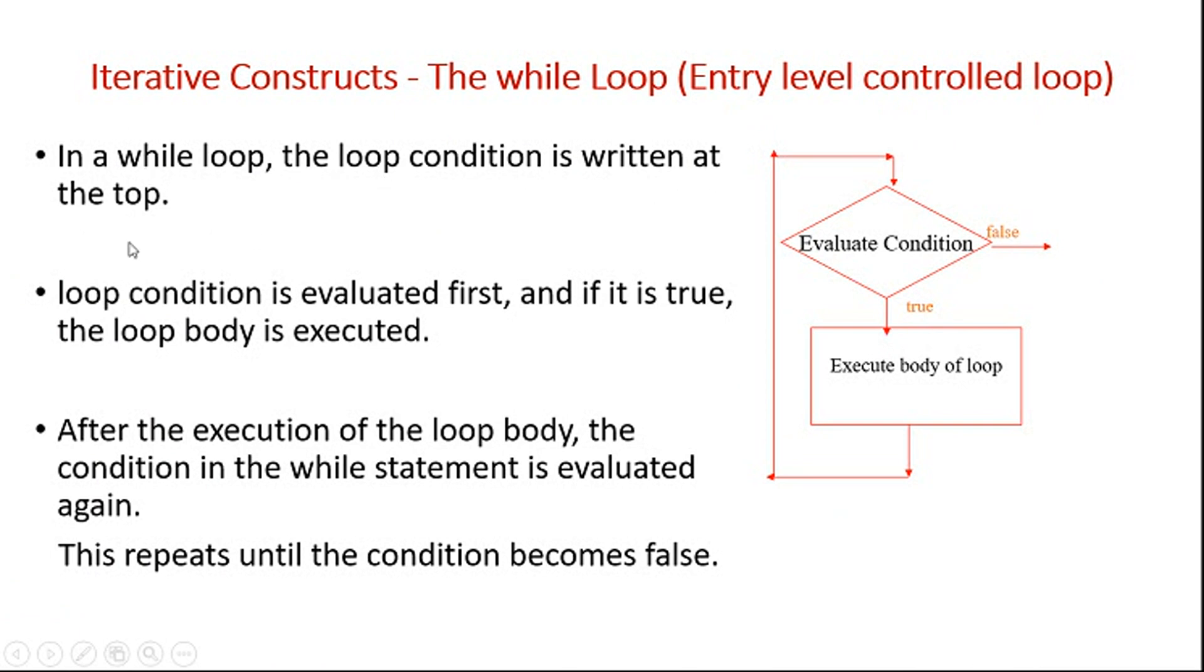In a while loop, the loop condition is written at the top. So that is what mentioned in this particular flowchart. Condition is checked at the start. Next, loop condition is evaluated first, and if it is true, the loop body is executed. So if this is true, then only the body of the loop will be in the execution.